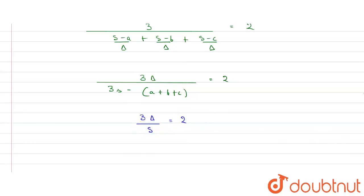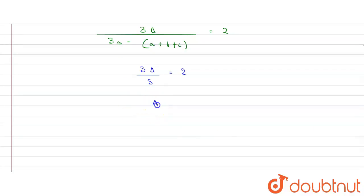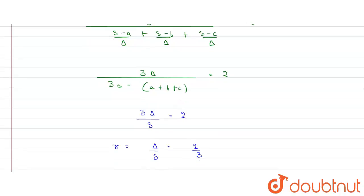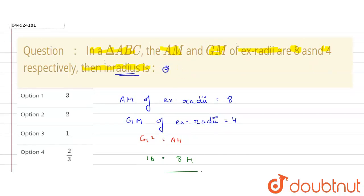So from here, value of delta upon s will be equals to 2 upon 3. And delta upon s is what? r. r is what? Inner radius. We need to find the value of inner radius and we have got that r is equal to 2 by 3. So it will be equal to 2 by 3. 2 by 3 is what? Option number 4. This is the right answer. Thank you.